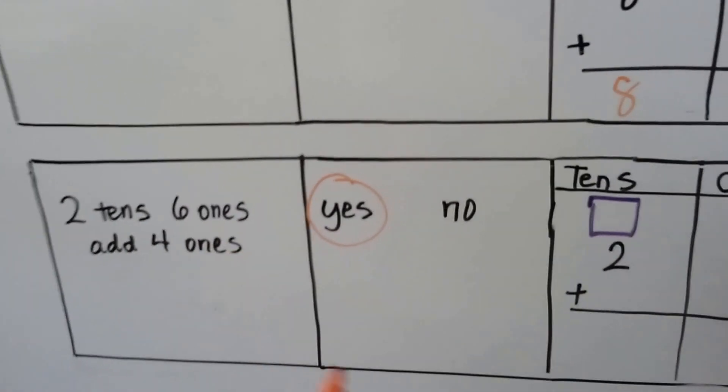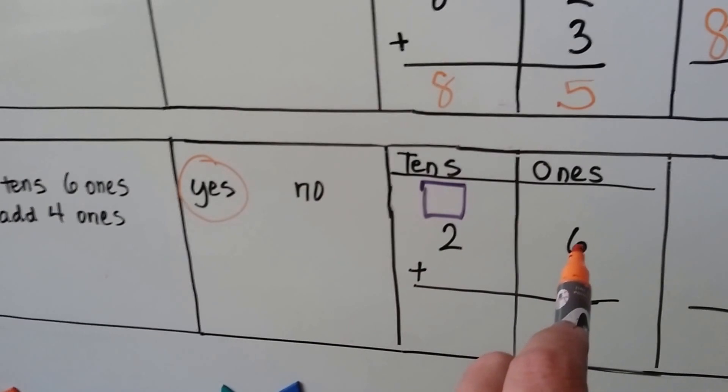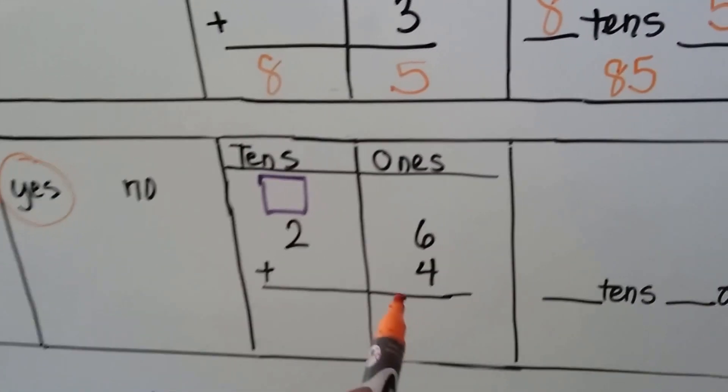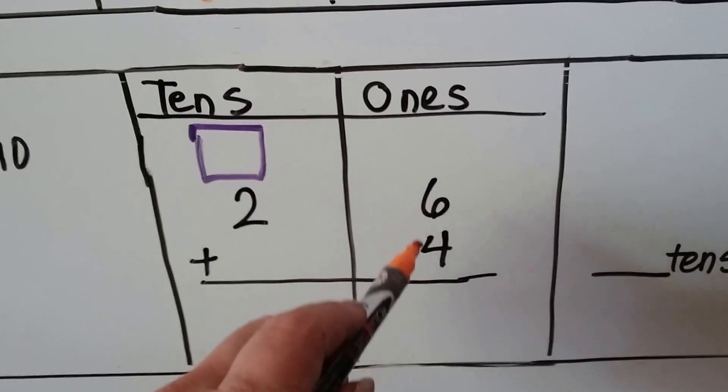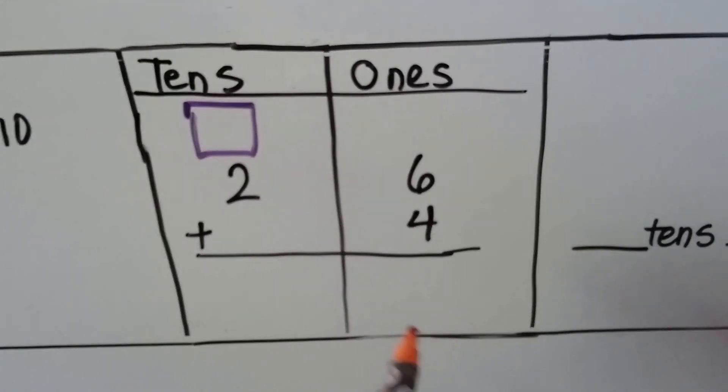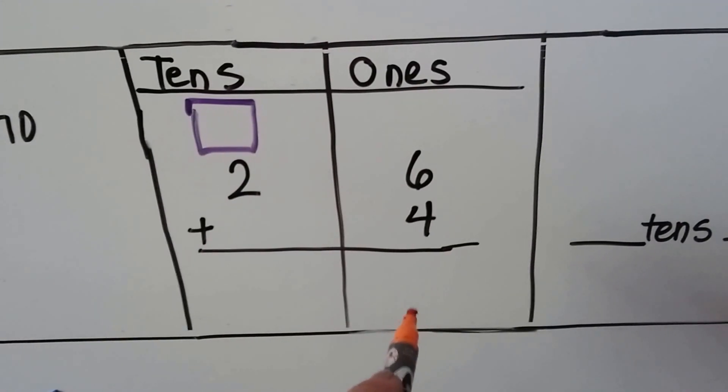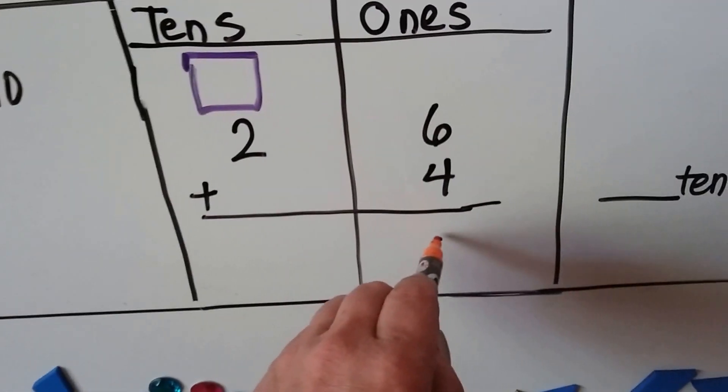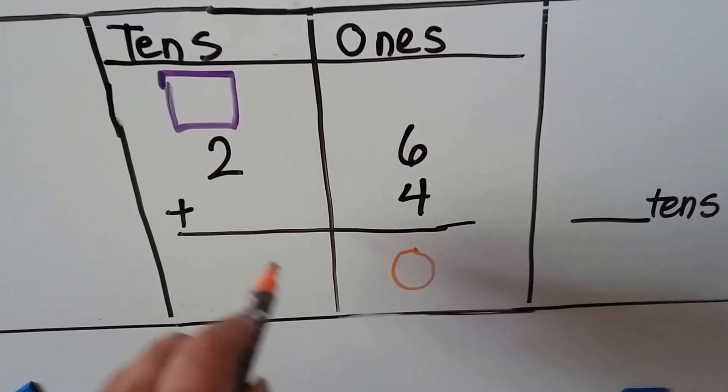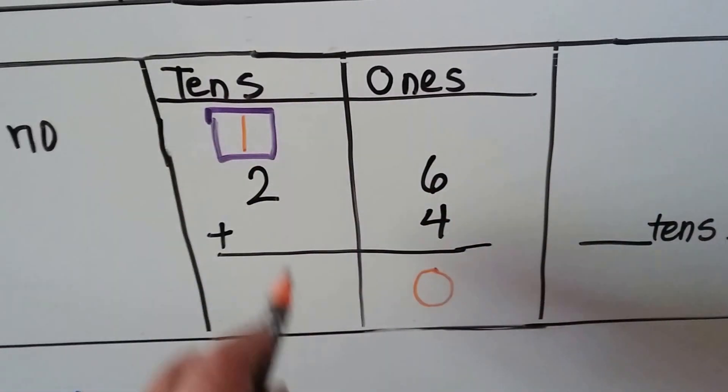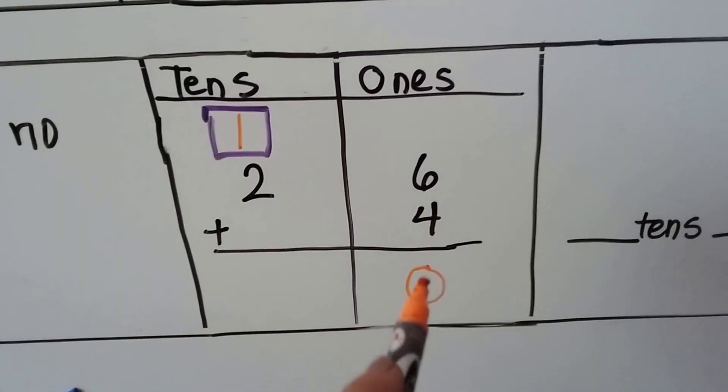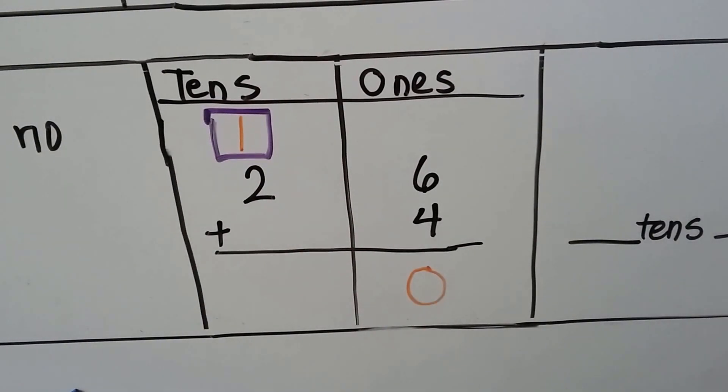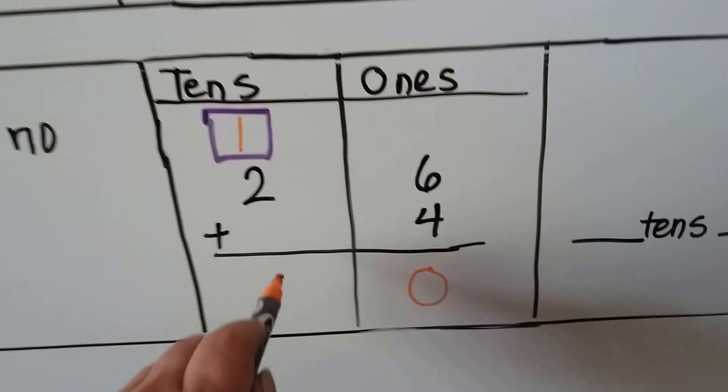We have 2 tens and 6 ones. We're going to add 4 ones. We just saw that 6 plus 4 is 10. We can only put 1 digit in each place value column. So we're going to put a 0 here. And the 1 that we had for the 10 is going to go here. 6 plus 4 is 10. Here's the 1 for the 10 and here's the 0. See? And 2 plus 1 is 3.